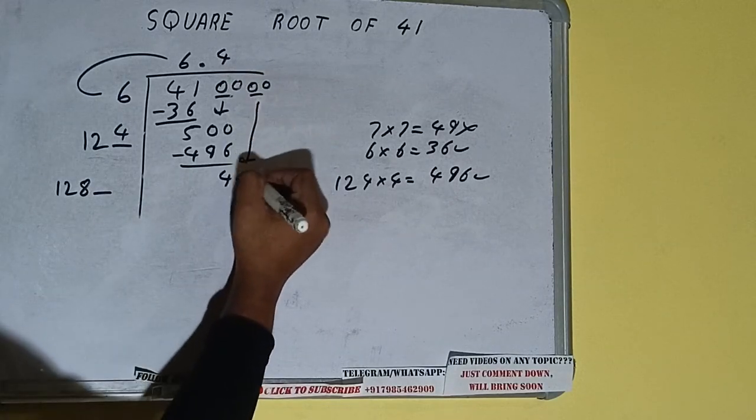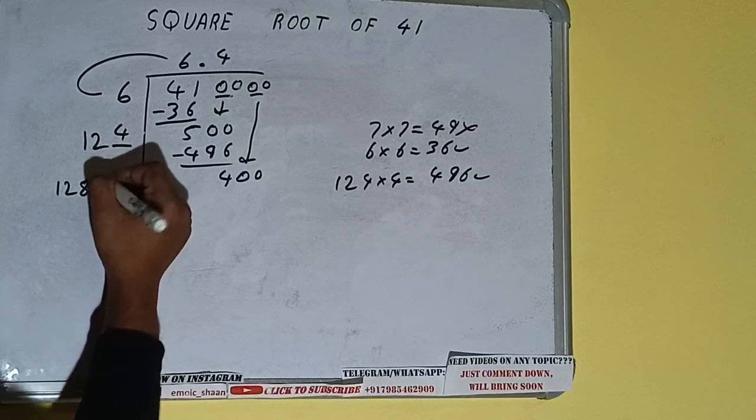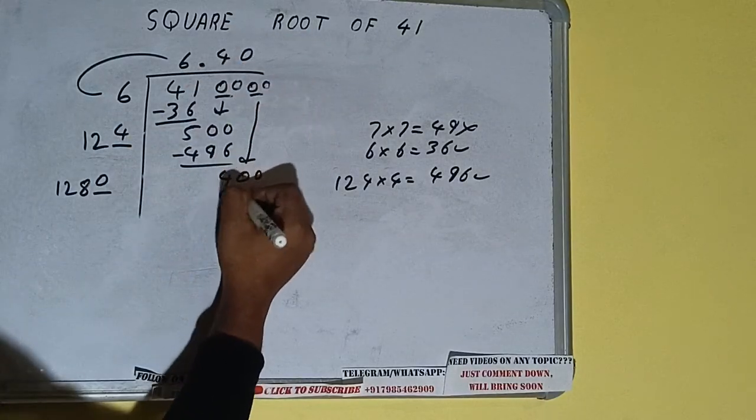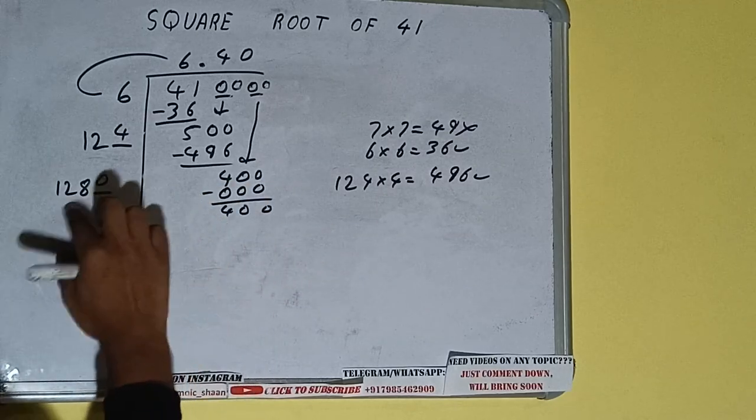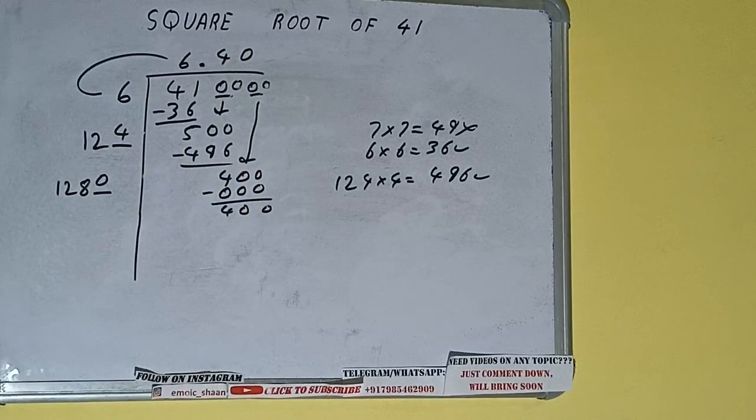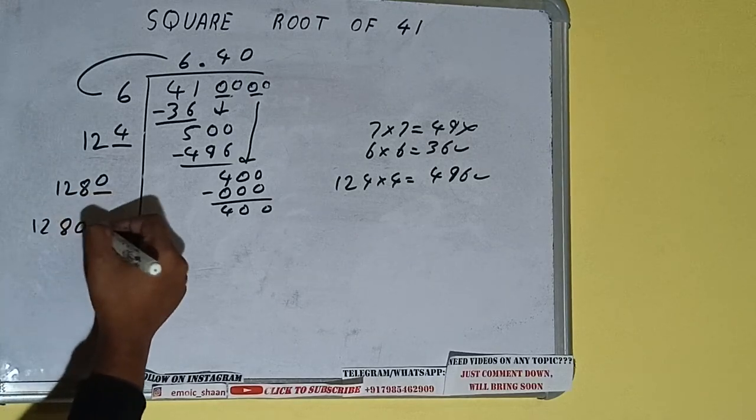Bring the next pair of zeros down and it will be 400. Now we can write 0 here and 0 here. We'll be having 0, subtract 4 and it will be left. Now 1280 into 0 we did, so add both—1280 plus 0 will be 1280, 1 digit extra.